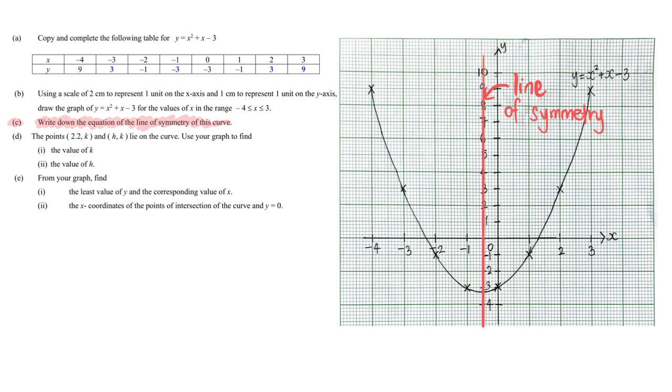The value of x actually is negative 0.5 for the x value, and therefore for this particular answer for part C, the equation of the line of symmetry would then be x equals negative 0.5.